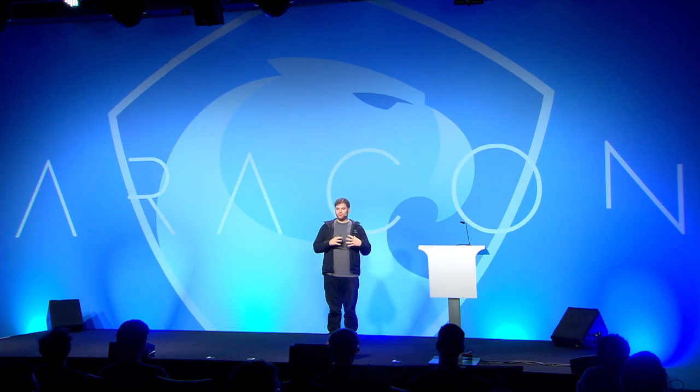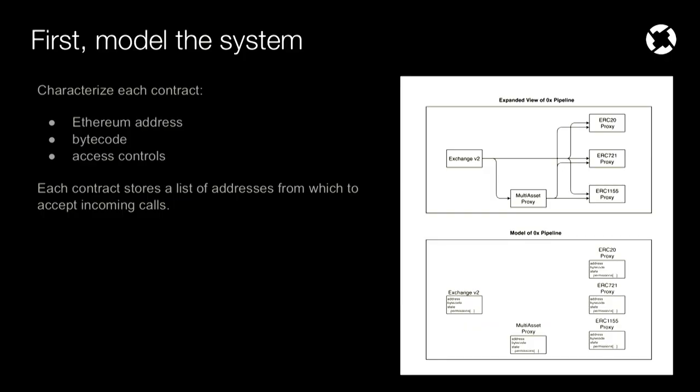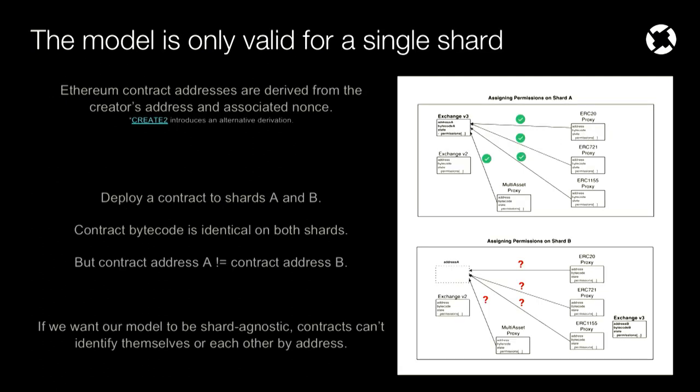Before we can create a metamodel, we have to have a basic model of the system of smart contracts we want to focus on. We can do this by focusing on each individual component within the system in isolation. Every single smart contract has some basic things associated with it: it has an Ethereum address, it has some bytecode which describes how it works, and then it has some internal state. For 0x, the only internal state we're really concerned with are the access controls between different contracts. Each contract within the 0x pipeline has an internal list of Ethereum addresses from which it is willing to accept incoming calls.